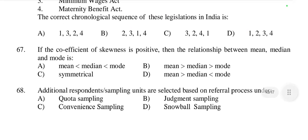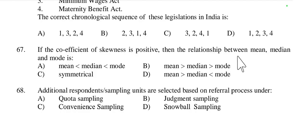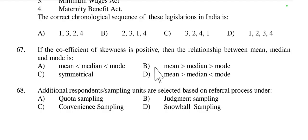Question 67: If the coefficient of skewness is positive, then the relationship between mean, median, and mode is — mean greater than median greater than mode. This is called positively skewed distribution. So option A is right.